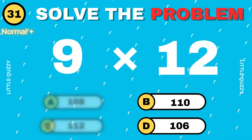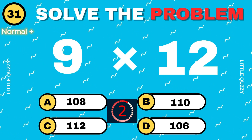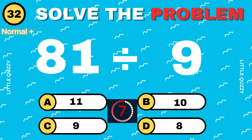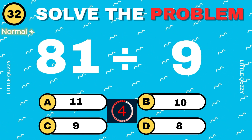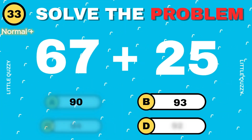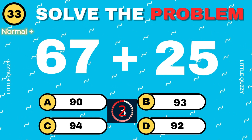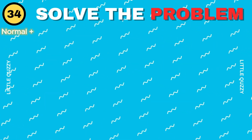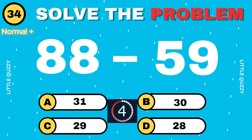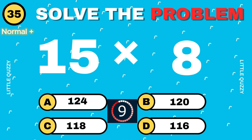What is 9 times 12? The answer is 108. What is 81 divided by 9? Correct answer: 9. What is 67 plus 25? The answer is 92. What is 88 minus 59? Correct answer: 29. What is 15 times 8? The answer is 120.